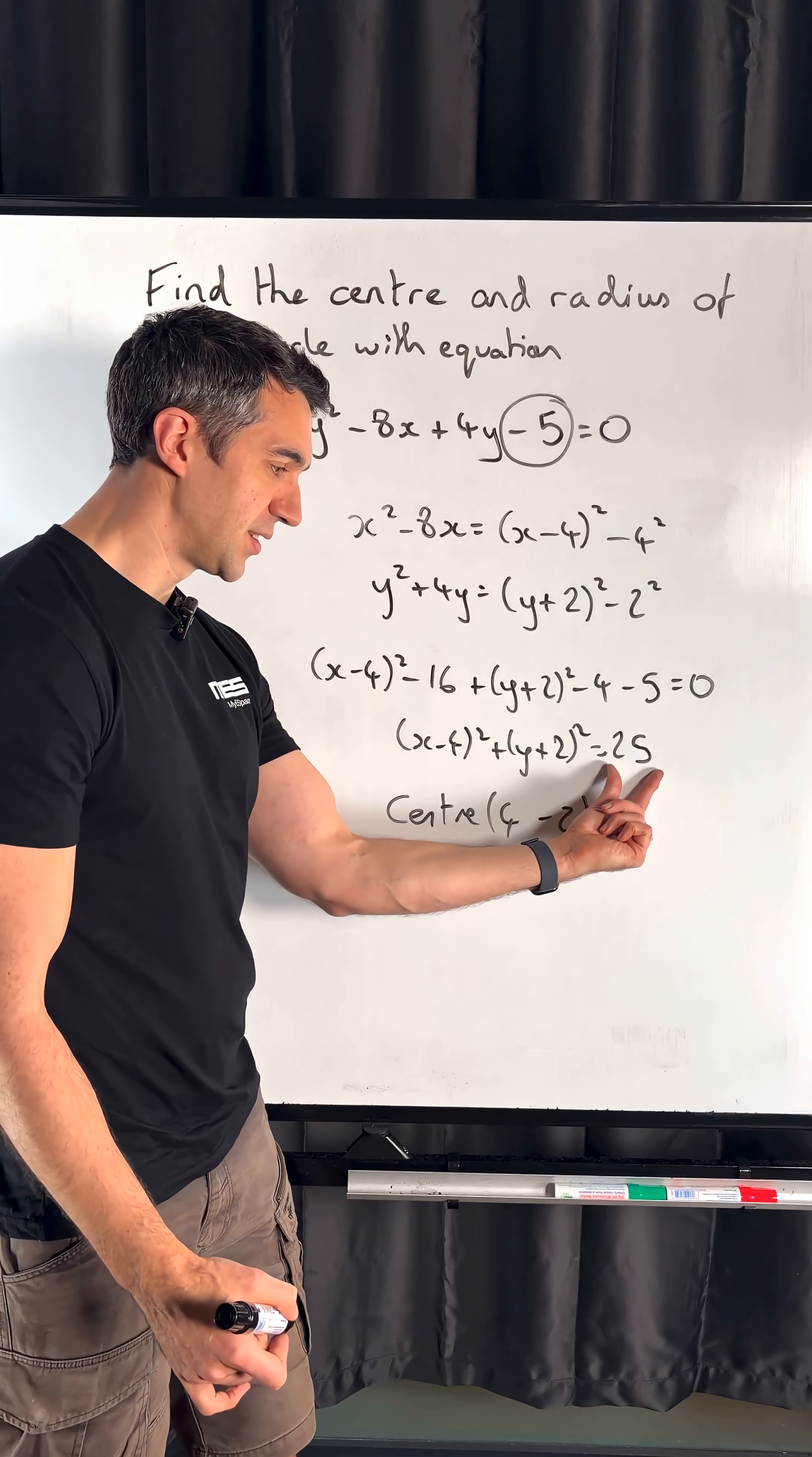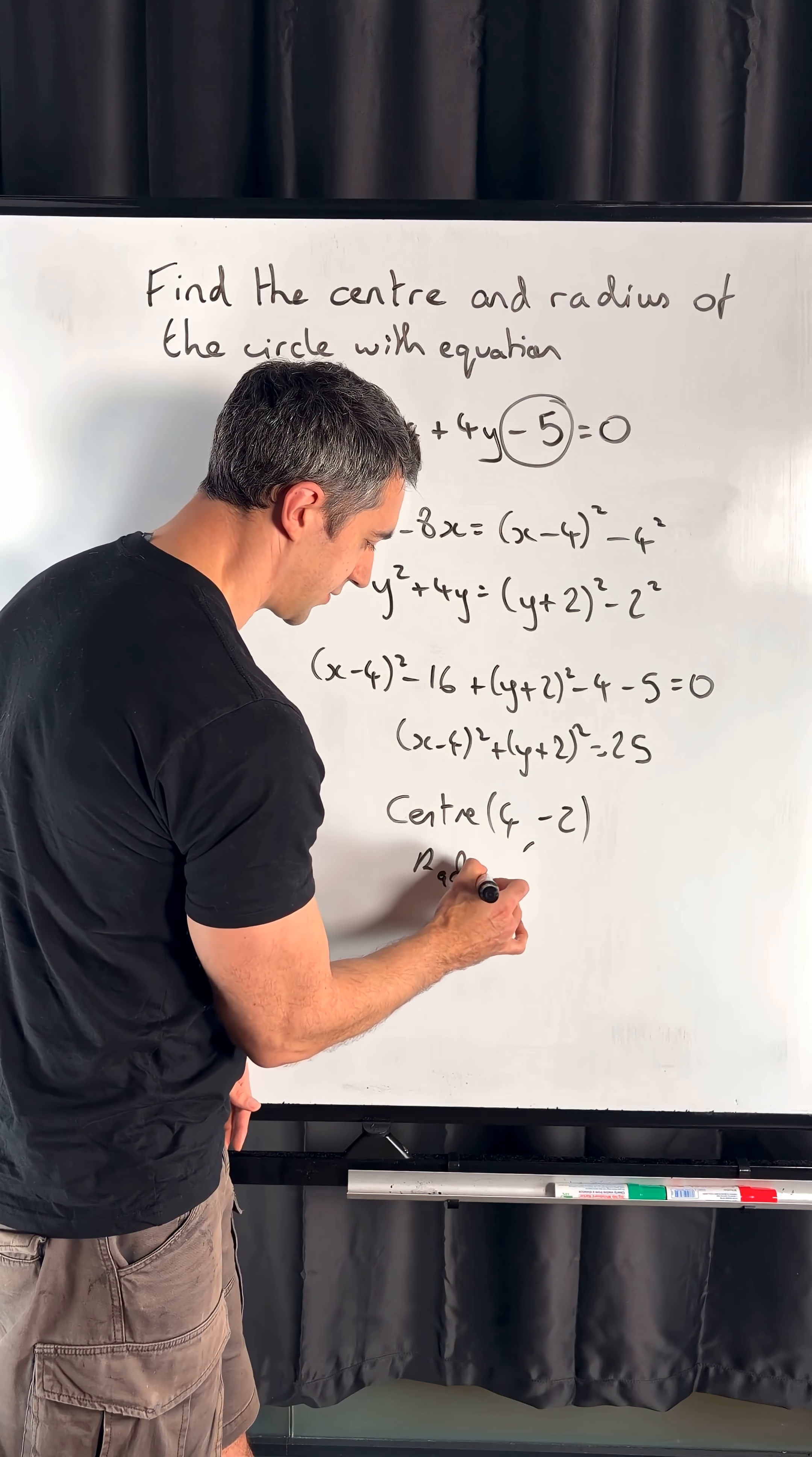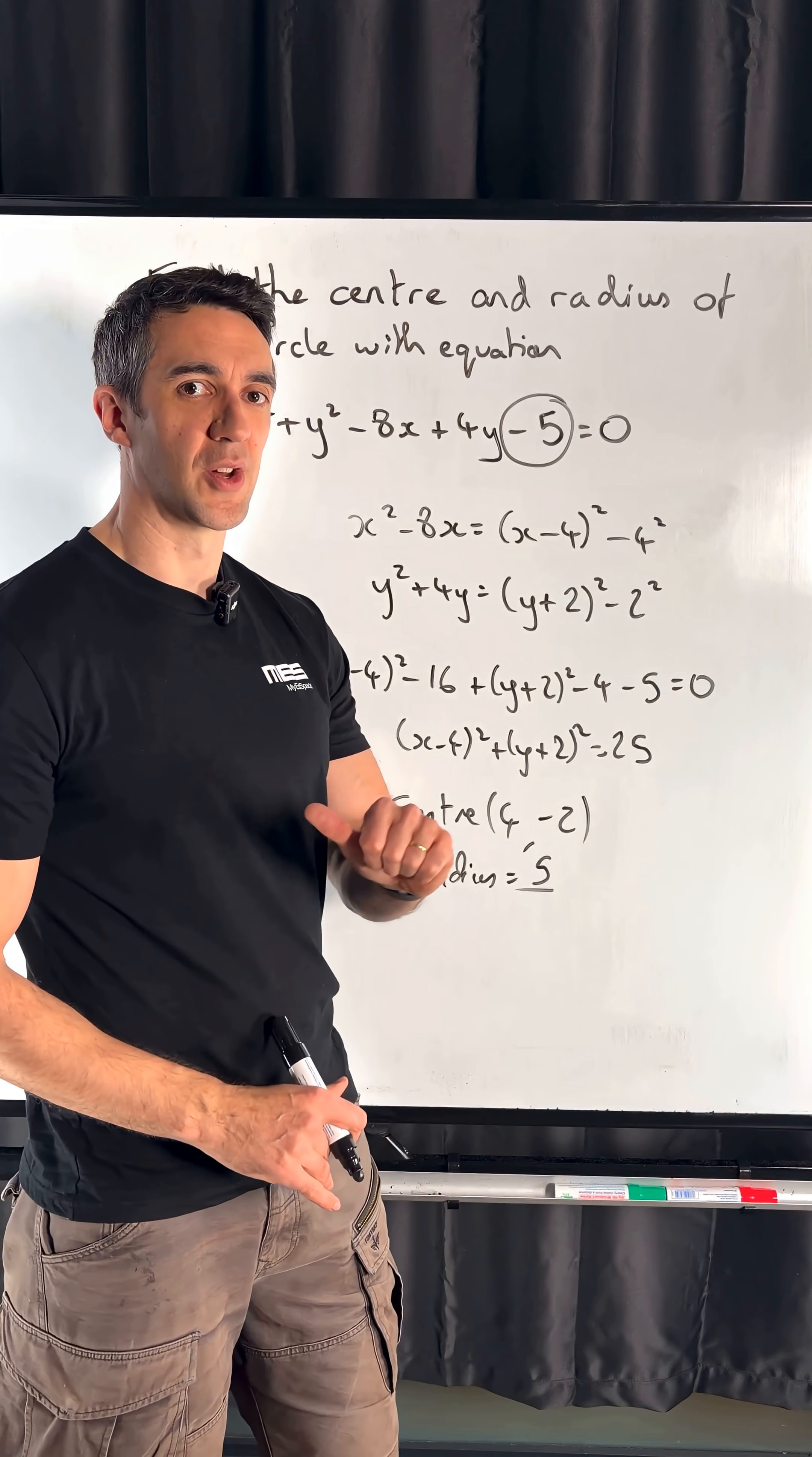And then our radius—this number here is our radius squared—so our radius is just going to be the square root, in this case of 25, which is just 5. There's our basic skill so that we're then ready to tackle any parts that come after.